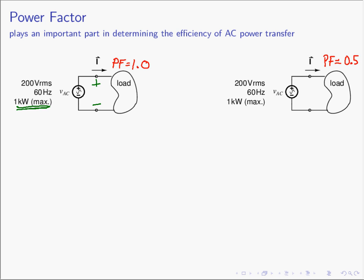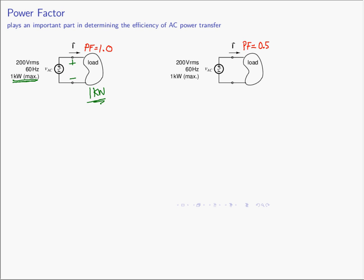If we would like to receive one kilowatt at our load, let's examine what's going on. Since it's a kilowatt, we know that this must be average power. The average power in this system is going to be the voltage, which is 200 volts, and the current is unknown, times the cosine of theta minus phi, which is the power factor.